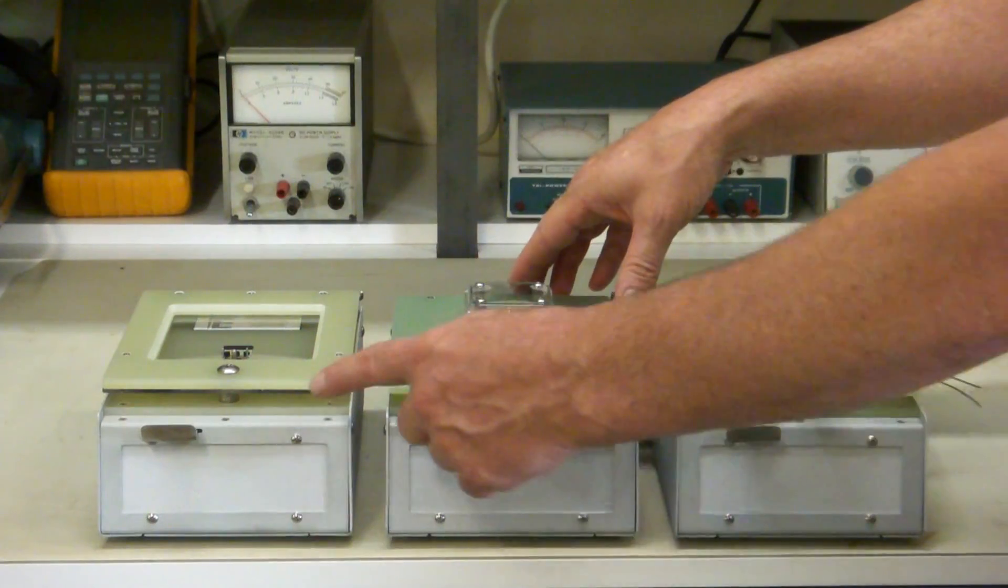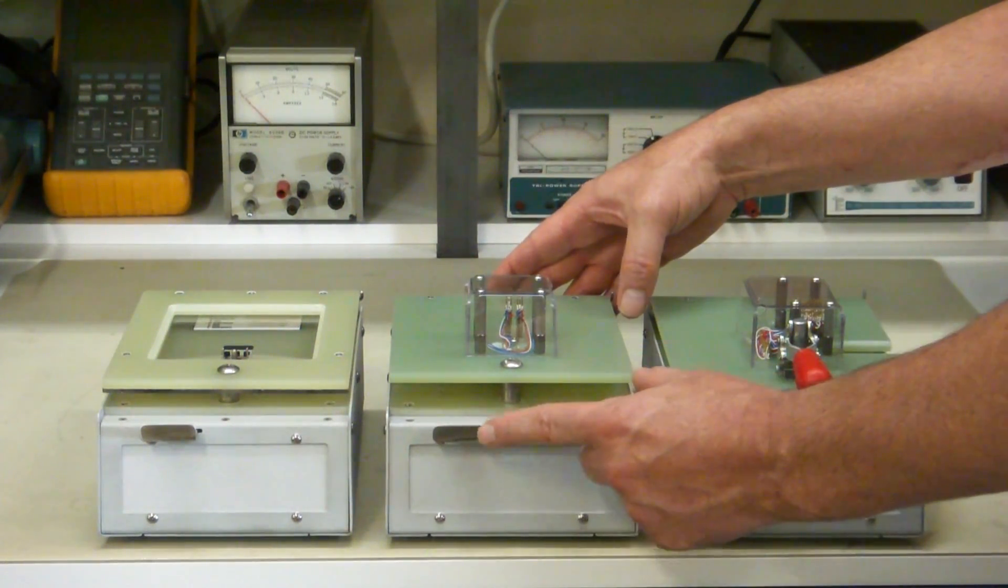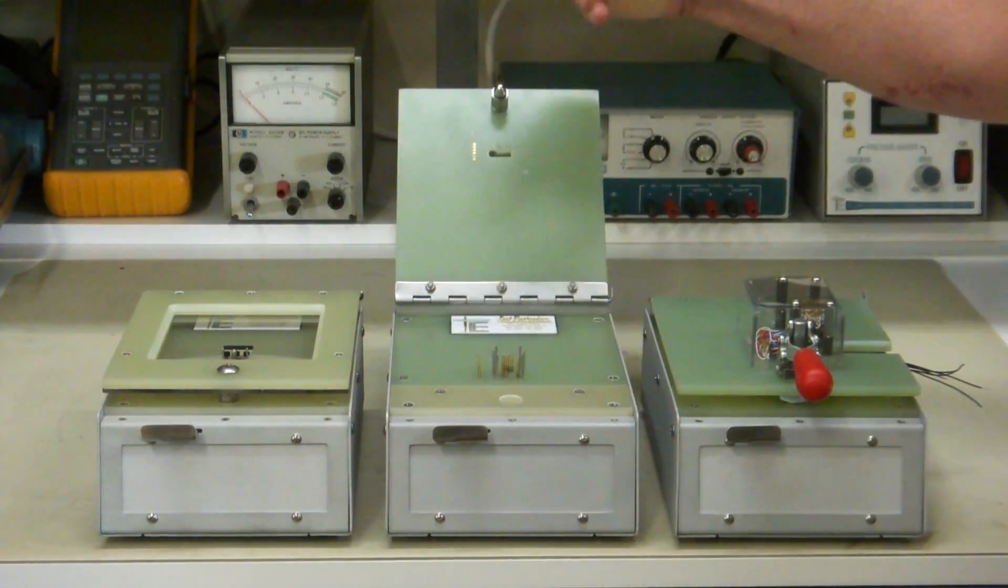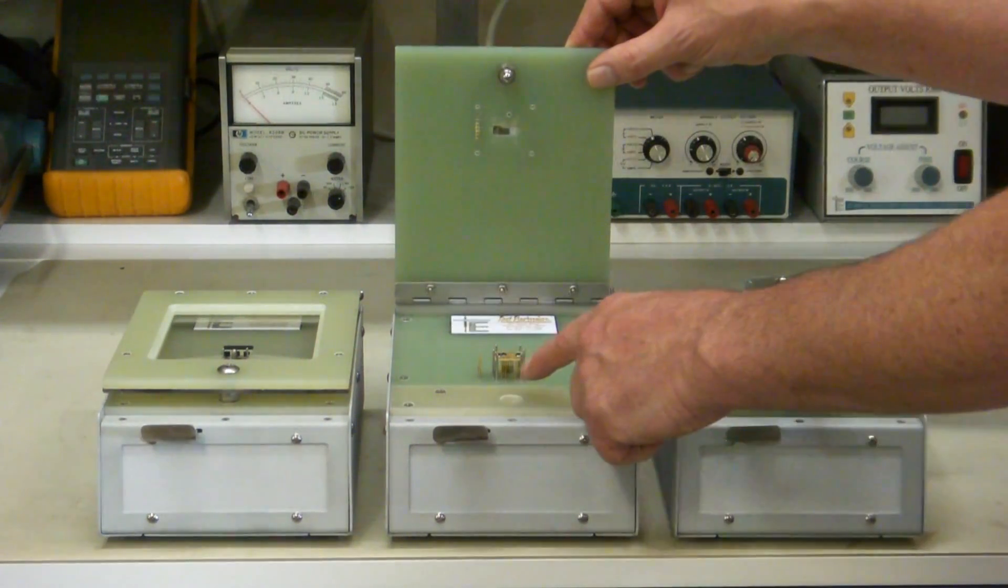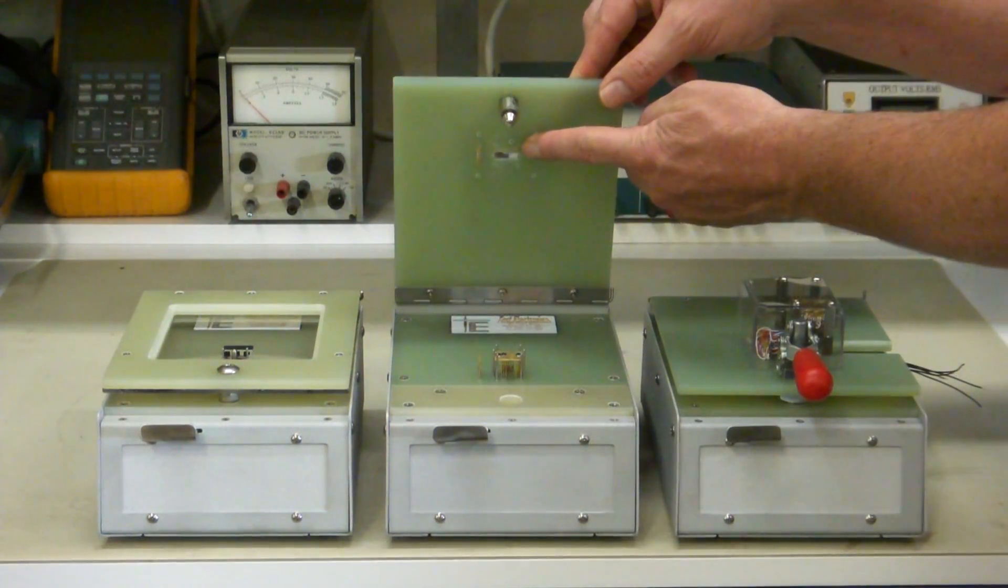Now the difference between that one and this one, this is double sided. It works the same way. You press this lever, it releases the top plate. You can take your board out, put a new board in and test again. Now the difference between this one is it probes the board from both sides, from the bottom and the top.